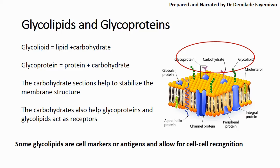Glycolipids also act as cell markers or antigens, which is important in immunity. In autoimmune diseases, the immune system attacks the cells of the host because some of the markers on those cells may be faulty, causing the immune system to think they are infected or foreign cells, and as a result it attacks them. We will discuss this in more detail in Chapter 11.